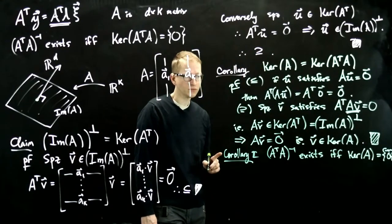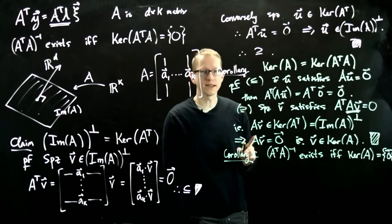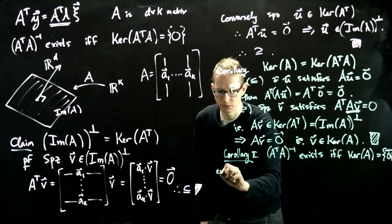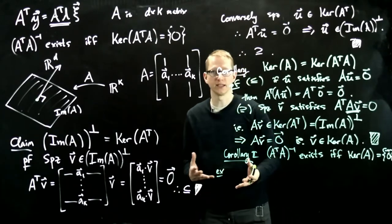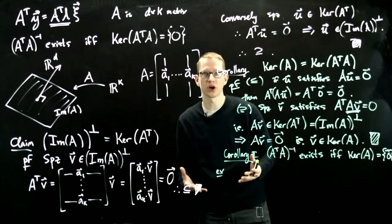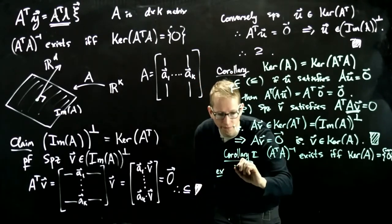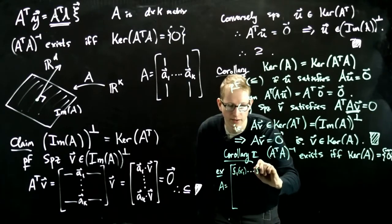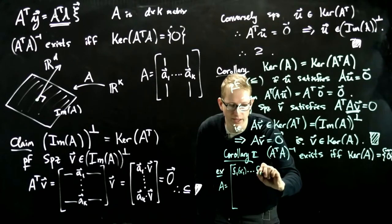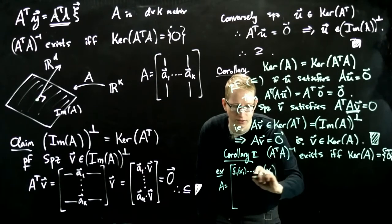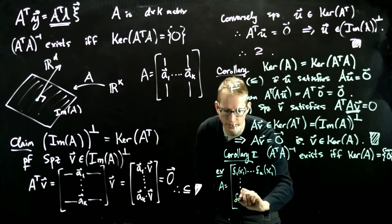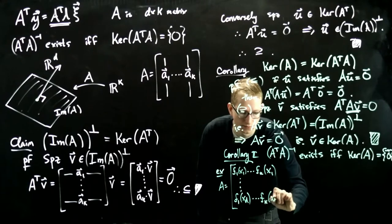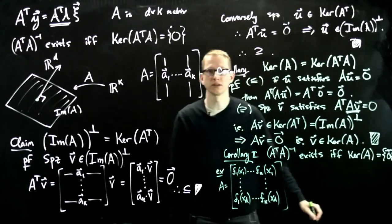Now, why is this reasonable? This isn't really an example, it's sort of an idea for why this usually occurs when you're trying to fit data. So our matrix A is typically going to be of the form F1(X1), FK(X1), all the way down to F1(XD), FK(XD). So typically our matrix A looks something like this.